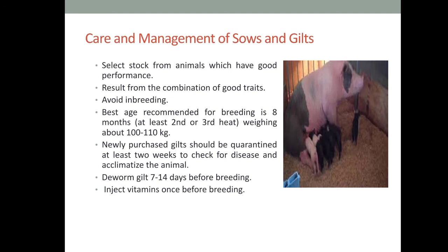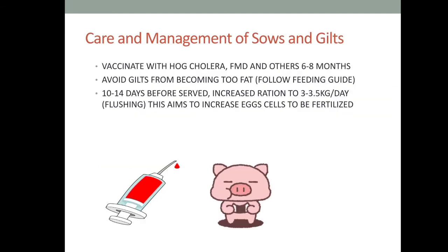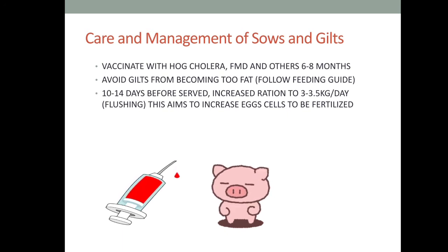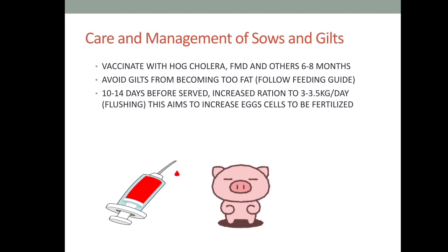Newly purchased sows and gilts should be quarantined and separated first, then checked for diseases. Deworm gilts 7 to 14 days before breeding and inject vitamins 1 week before breeding. Vaccinate sows and gilts with hog cholera, FMD, and others at 6 to 8 months. Avoid gilts from becoming too fat. Always maintain the feeding protocol, and 14 days before service, increase ration to 3 to 3.5 kilograms per day to increase the number of egg cells to be fertilized.